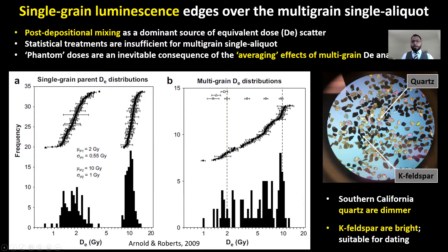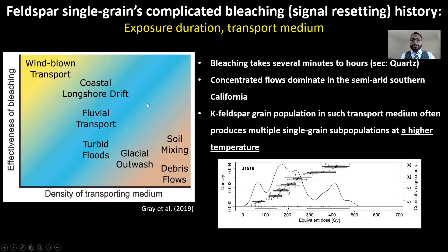Quartz, although considered the best candidate for luminescence dating, is much dimmer in Southern California and therefore not suitable for single grain analysis with current technology. Feldspar, primarily potassium feldspar, has a more complicated system but is much brighter in this environment. Another major limitation with potassium feldspar is that it takes several minutes to several hours to completely bleach, unlike quartz which bleaches in few seconds when exposed to sun. The bleaching potential of potassium feldspar also depends on the duration and medium of transport, as shown in this diagram. For example, windblown sediments bleach well; sediments in concentrated flows, not so much.